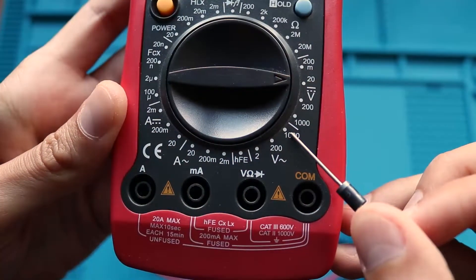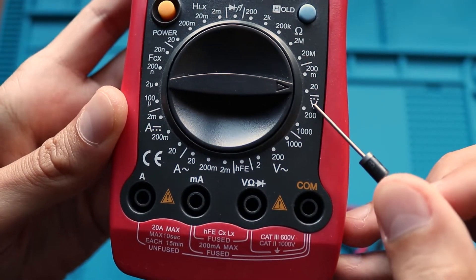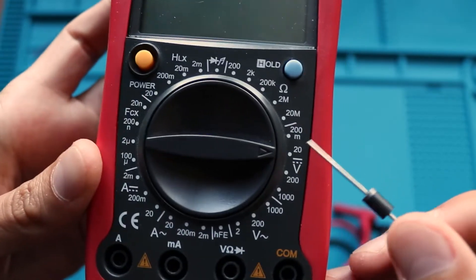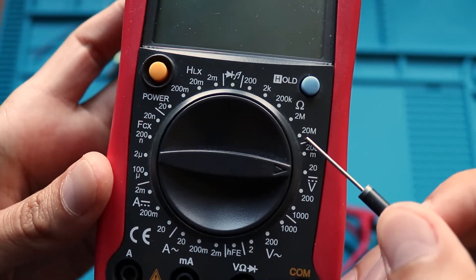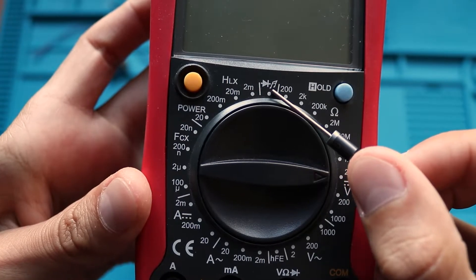Also to pick what you want to measure and its range, there is a rotating switch. So here you can pick AC voltage, DC voltage, resistance, diode tester, inductance, capacitance, DC current and AC current.